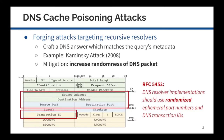Traditional DNS cache poisoning attacks target recursive resolvers. An attacker forges DNS packets with matching metadata, including ephemeral ports and DNS transaction IDs, and tricks resolvers into accepting the rogue responses. However, after the adoption of randomization defenses, it has been more difficult for the attacks to succeed.